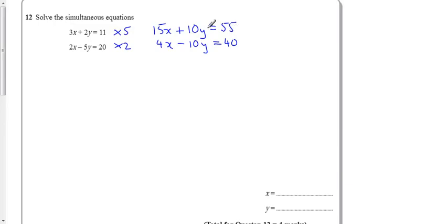Now, the reason I made the y's the same is because I can now add these two equations, and I get positive numbers, because to get rid of them, that's all I have to do, to get rid of the 10y and the minus 10y, add both sets together.